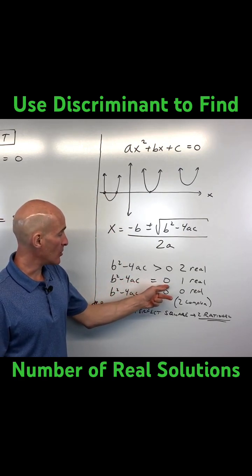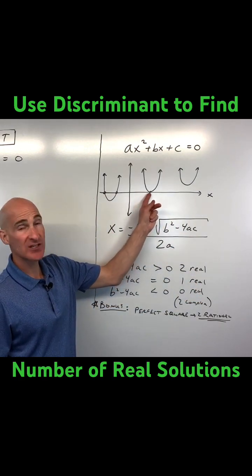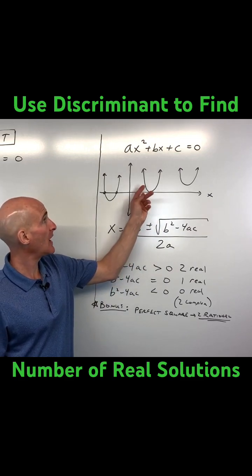If it's equal to zero, then there's one real solution, meaning it crosses right at the vertex. So just one answer to this equation.